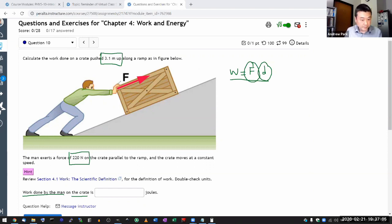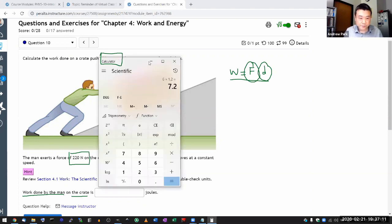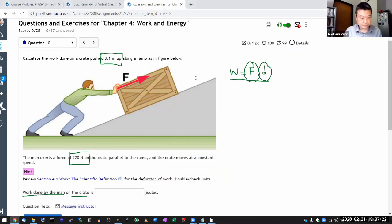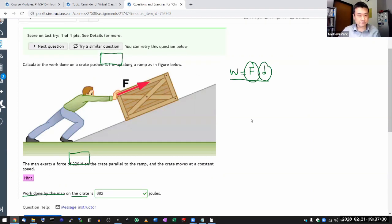You are also given the distance of 3.1 meters up along the ramp. So, all right, let's multiply. That seems like I'm all set. So let me do force times distance. Let's see what we get. 220 times distance 3.1 is equal to 682. So 682 joules. I get, okay, that's correct.